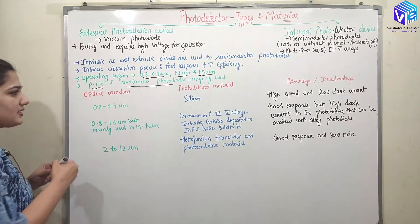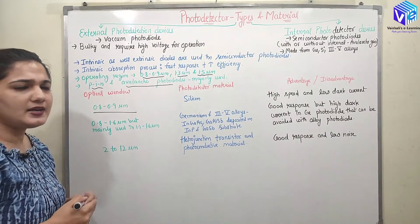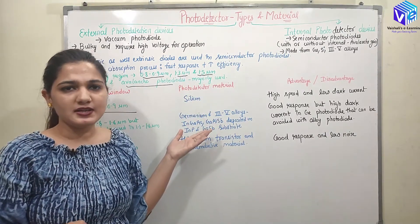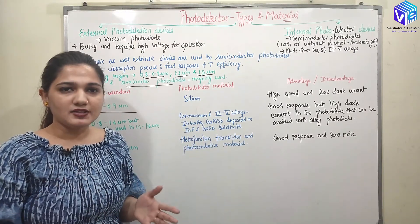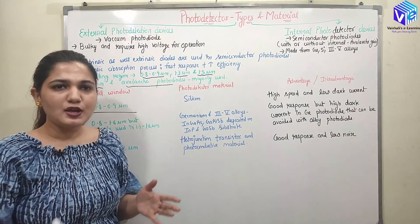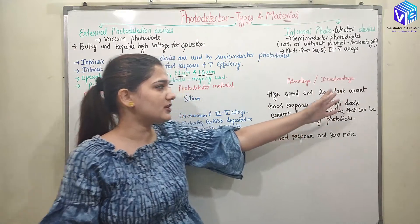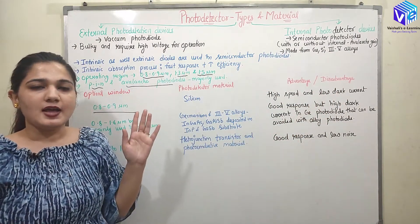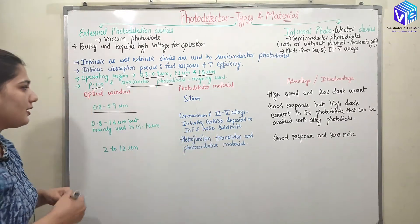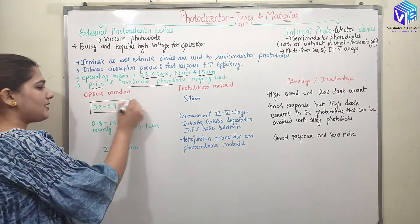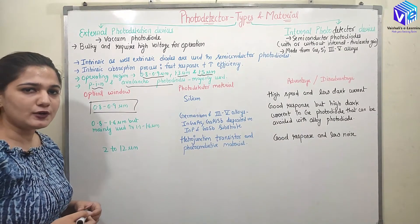Starting with the basic window of 0.8 to 0.9 micrometer, the photodetector material used is silicon. Silicon has a larger band gap energy than germanium, so the dark currents are less. This is the advantage of using silicon — we have low dark current and high speed. In the 0.8 to 0.9 micrometer range, basic silicon devices are used, which have high speed and low dark currents.